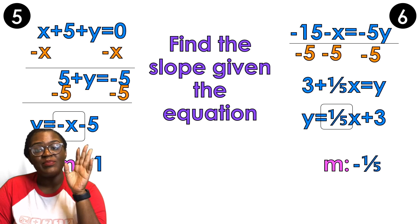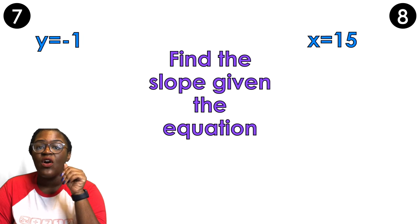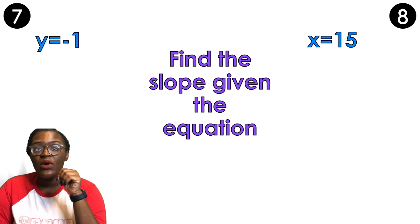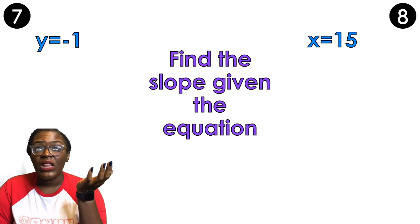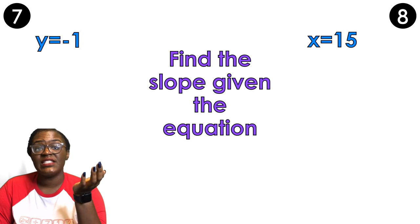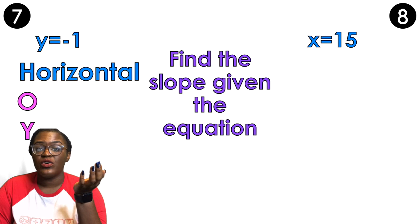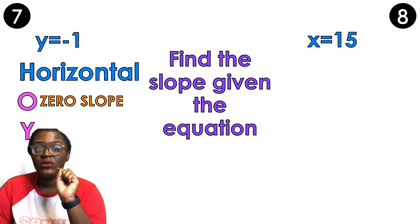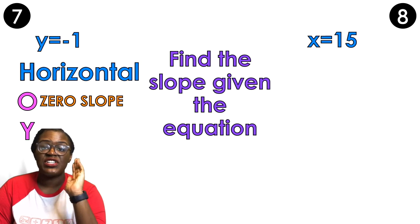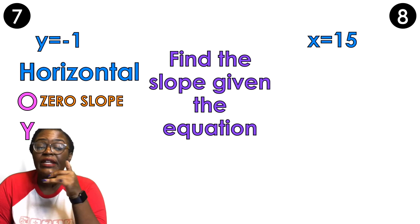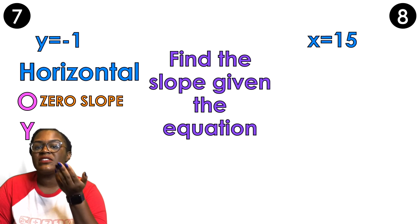So now let's talk about special case lines. So if I have Y equals negative 1 or I have X equals 15, let's do number 7 first. Y equals negative 1. Hello! What is the slope? Well, this is a special case line. It's a horizontal line, and horizontal lines always have zero slopes. And they look like Y equals a number. So anytime I see an equation that's just Y equals some number, any number, I automatically know that my slope is gonna be zero.